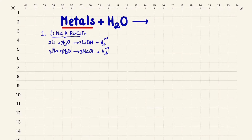When talking about potassium, it also reacts with water and produces potassium hydroxide and hydrogen gas. We have to balance the equation: 2K + 2H₂O → 2KOH + H₂.